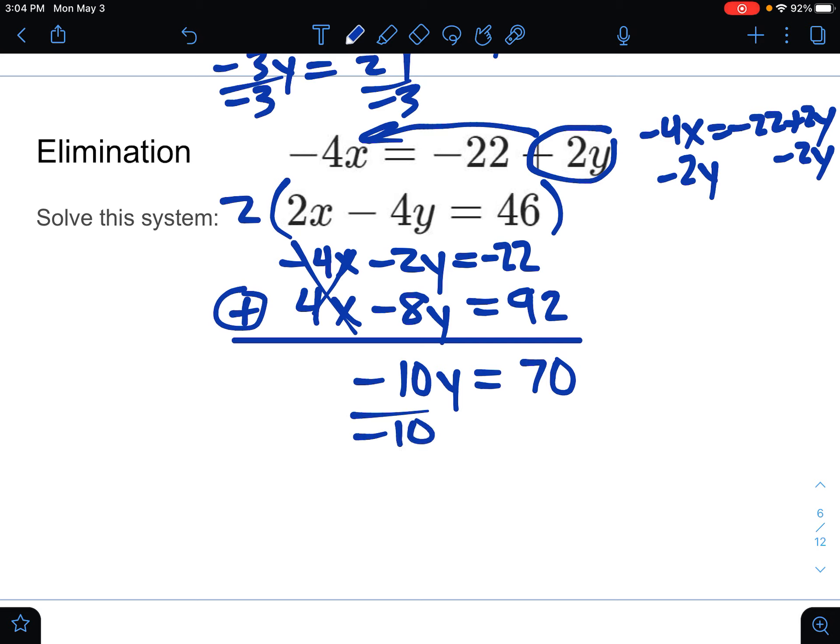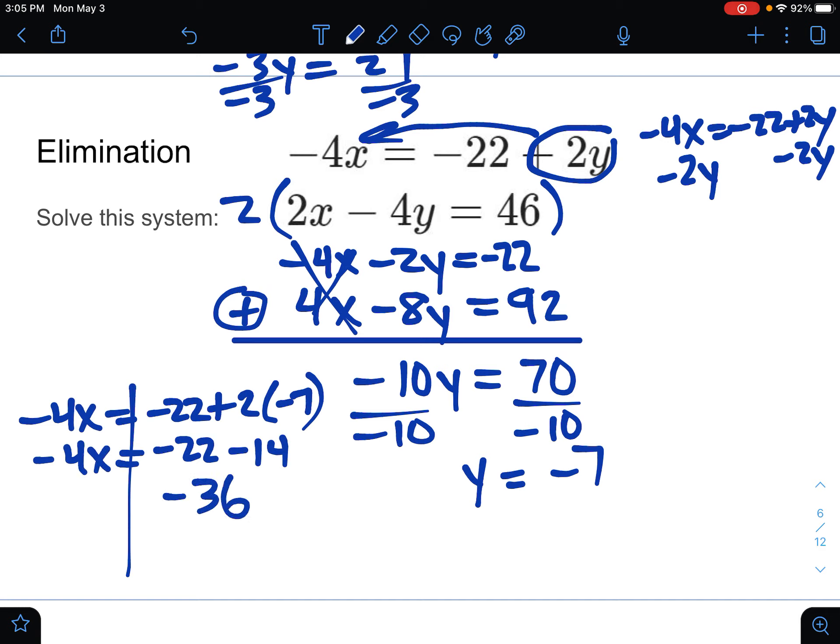Dividing by negative 10 will get us y. Y equaling negative 7. Then to get x, again, plug into either equation. I'm going to use the very first one, the original. So negative 4x equals negative 22 plus 2 times negative 7. So this will be negative 22 minus 14. So negative 36 equals negative 4x divided by negative 4 is going to get us to x. x equals positive 9. So our solution is going to be 9, negative 7.